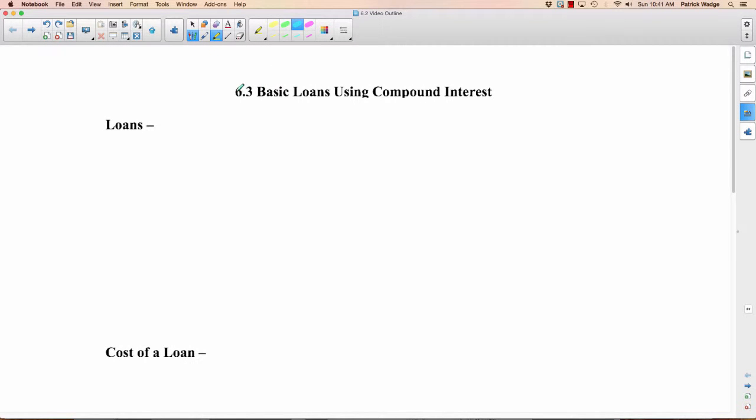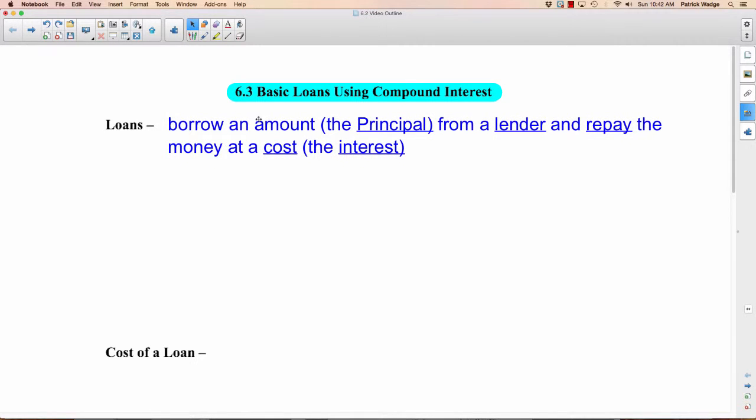6.3 is on basic loans using compound interest. I'm actually going to do this over two days, but I'm going easy on you guys. So we're going to start looking at loans now. A loan is when you borrow an amount, it's still called a principal, just like before when you put money into the bank. You borrow it from a lender, this is usually the bank, and you repay the lender all the money back plus extra. That extra, the cost, is the interest.